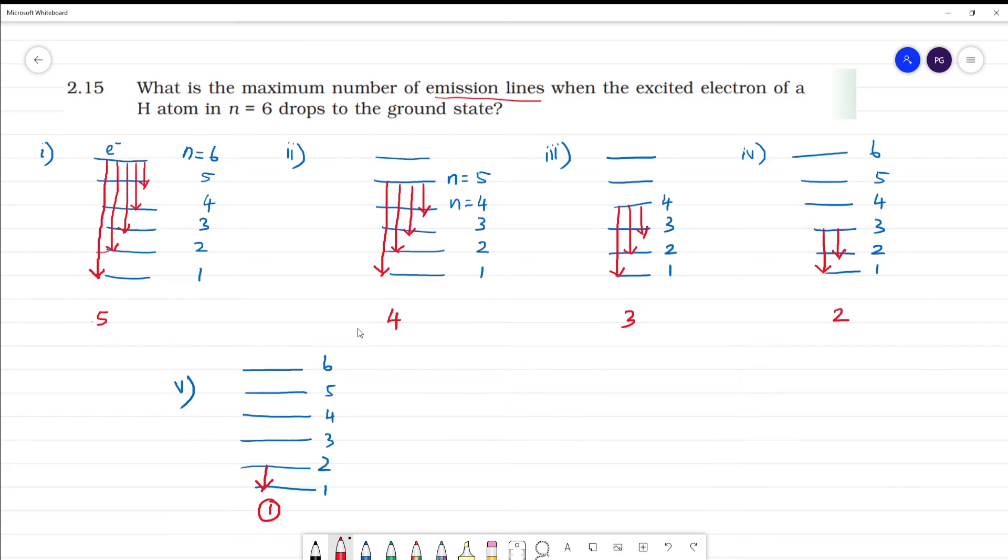Now calculate. 5 plus 4 is 9. 9 plus 3 is 12. 12 plus 2 is 14, and 15. So how many emission lines? 15 emission lines is possible.